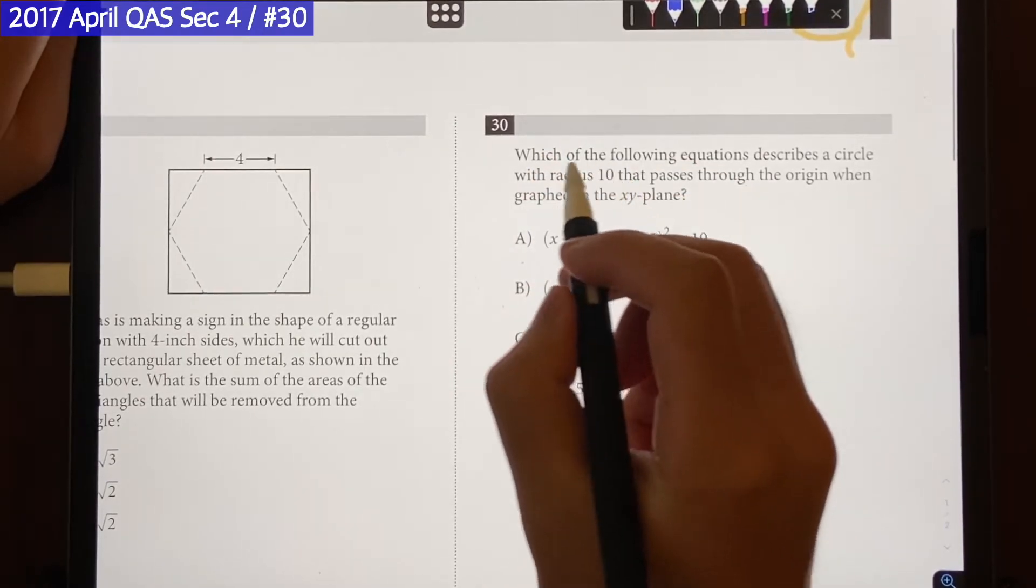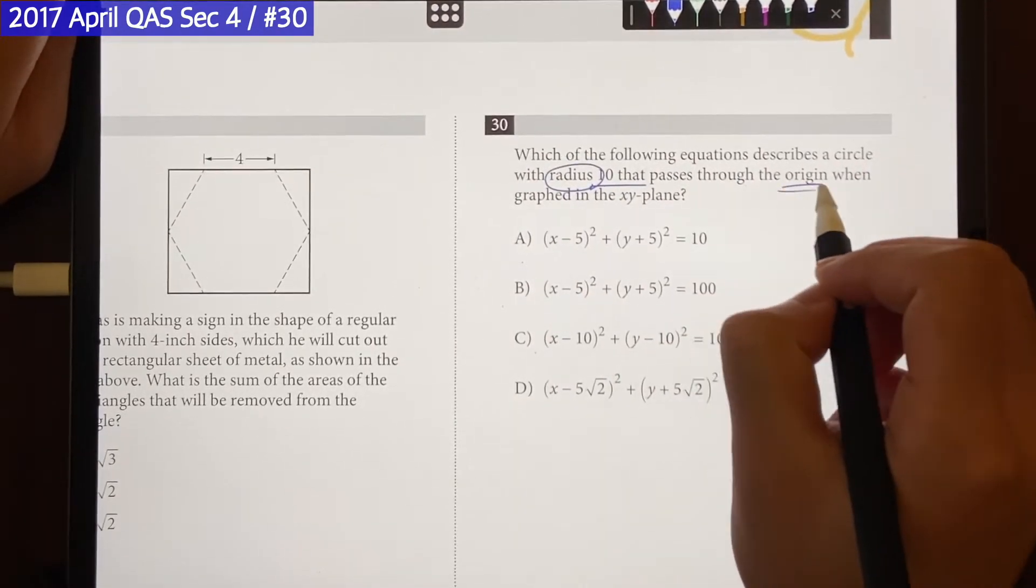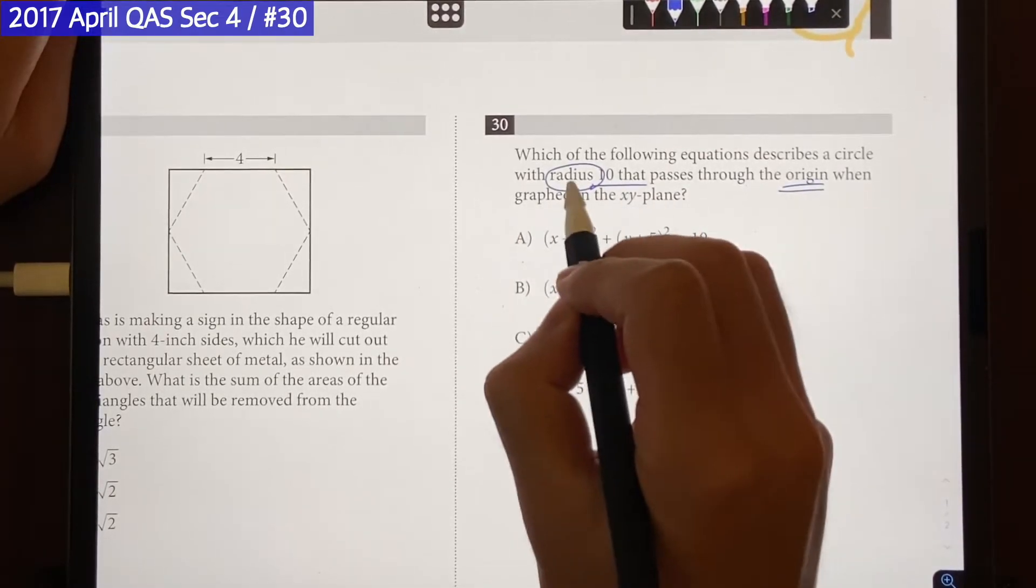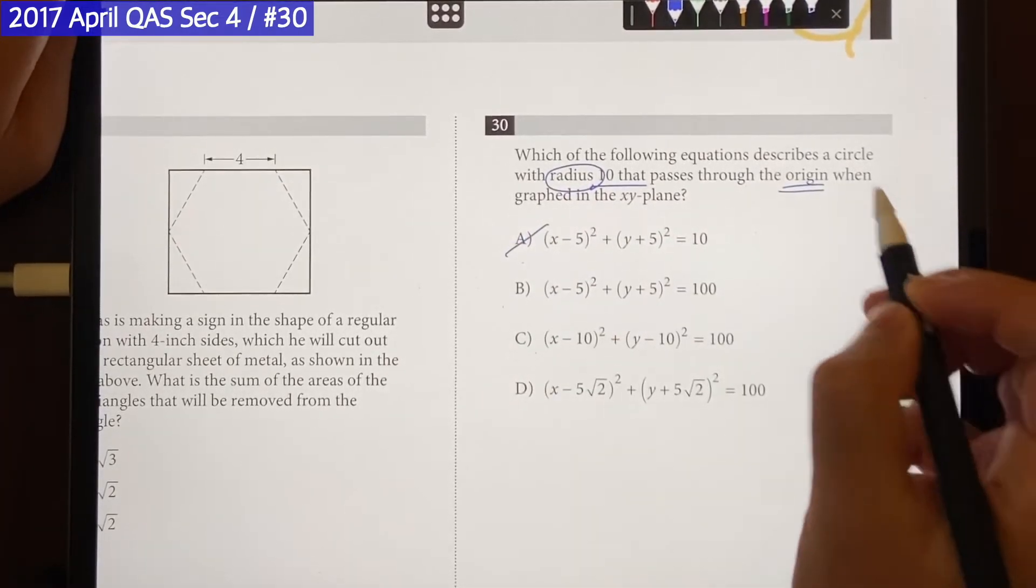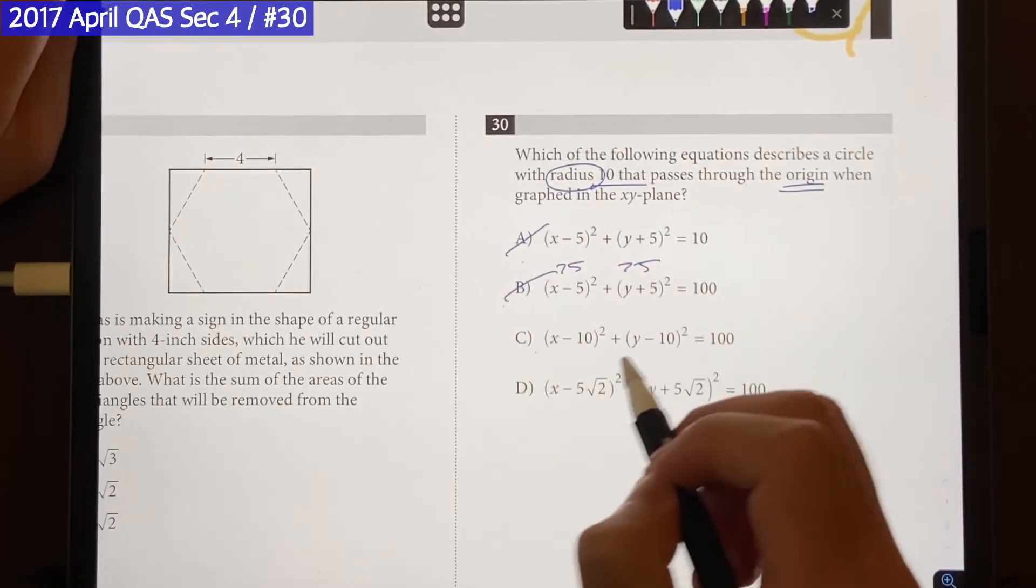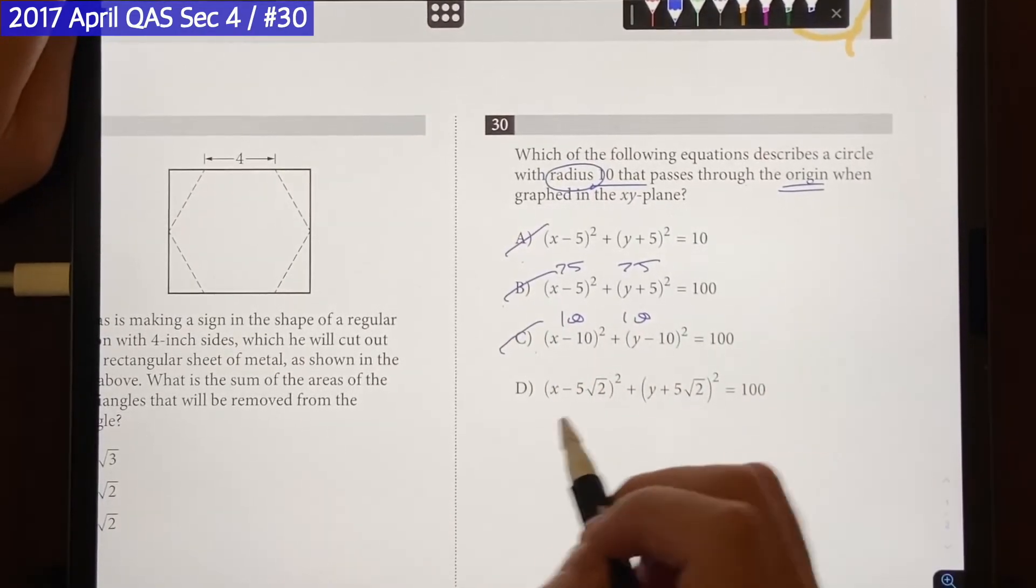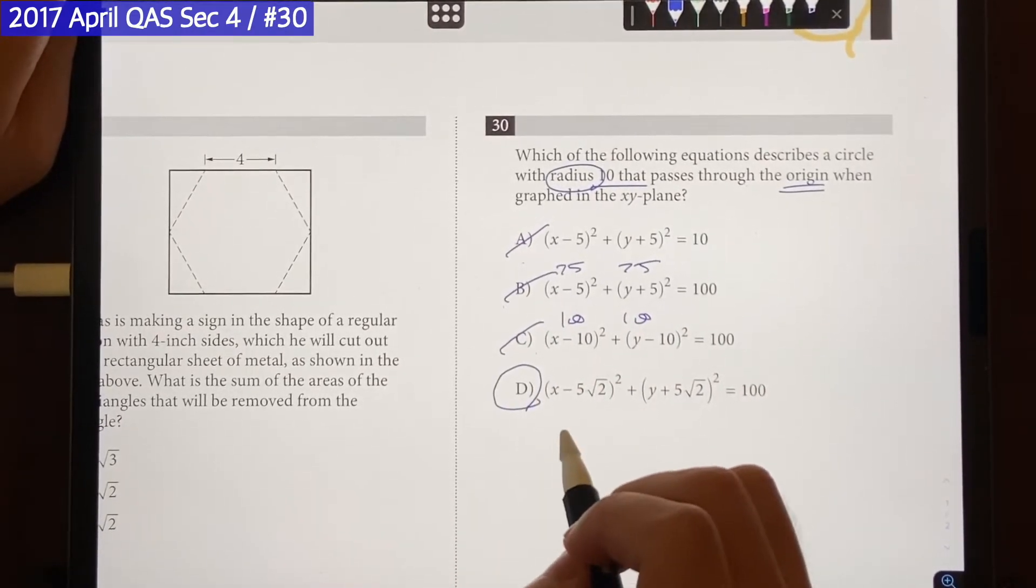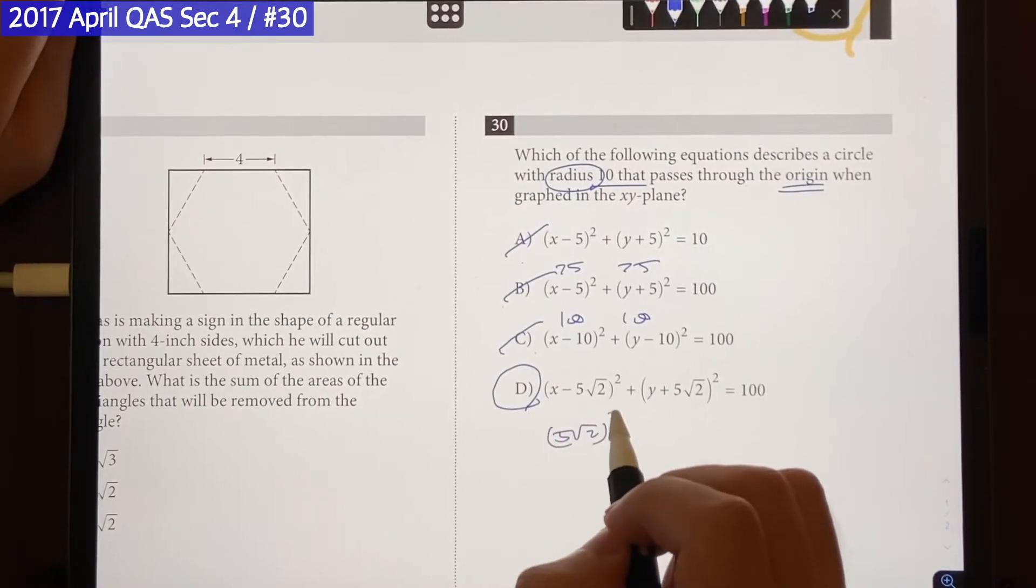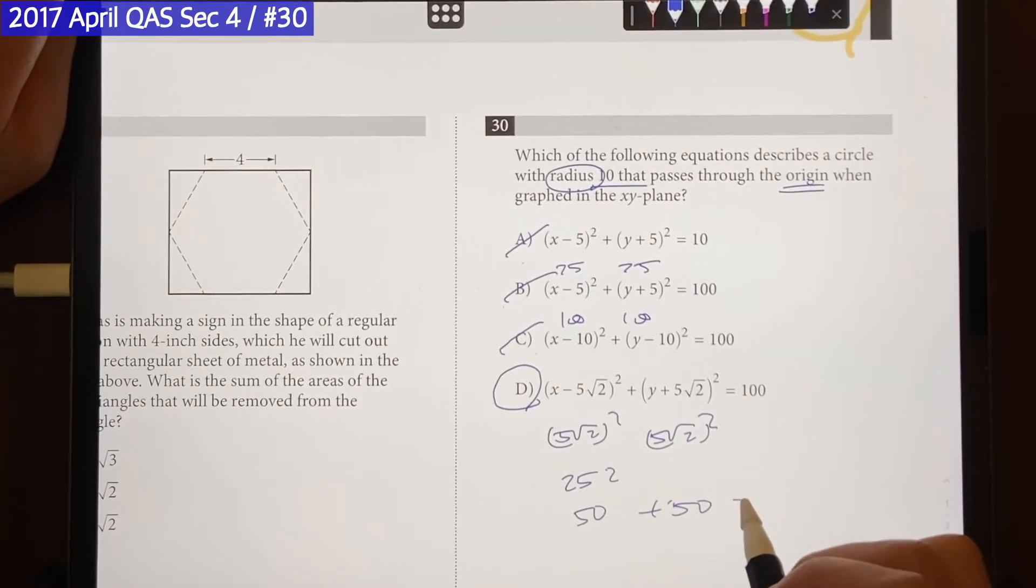So the question says which of the following equation describes a circle with radius of 10 passes through the origin when graphed in the xy plane. So radius of 10. Choice A is going to be out. Goes through the origin. It's going to be 25 plus 25. Choice B is out. It's going to be 100, 100. Choice C is out. It's going to be D. 5√2 squared, 5√2 squared. It's going to be 25 times 2 which is 50 plus 50 which is going to be 100. Answer is going to be choice D.